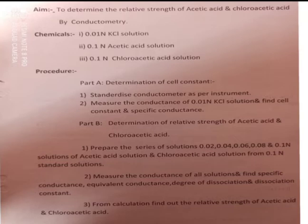Here is a protocol of the experiment. These three solutions you have to prepare yourself; all solutions are made up to 100 ml. Procedure Part A is the determination of cell constant. Initially, you have to standardize the conductometer as per guidelines. Measure the conductance of 0.01 normal KCl solution and find out the cell constant and the specific conductance.